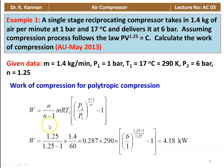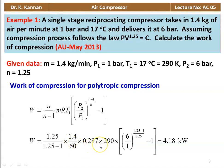W = (n/(n-1)) × ṁRT1 × [(P2/P1)^((n-1)/n) - 1]. Substituting numerical values: W = (1.25/0.25) × (1.4/60) × 0.287 × 290 × [(6/1)^(0.25/1.25) - 1]. The answer is 4.18 kW. So the work of compression is 4.18 kW.